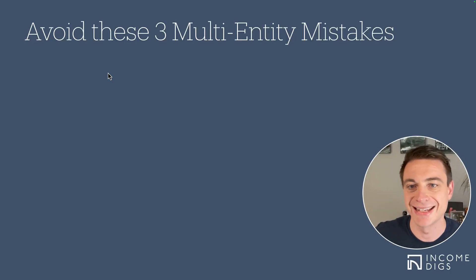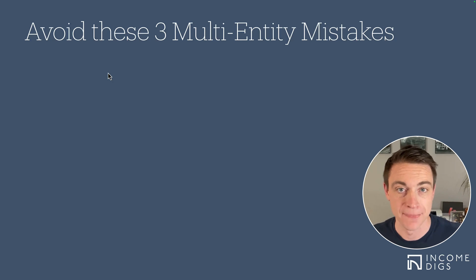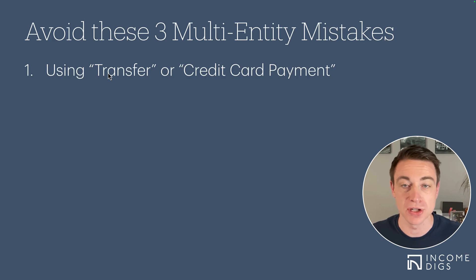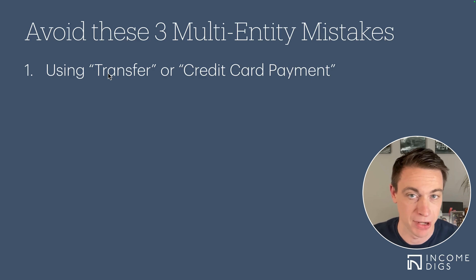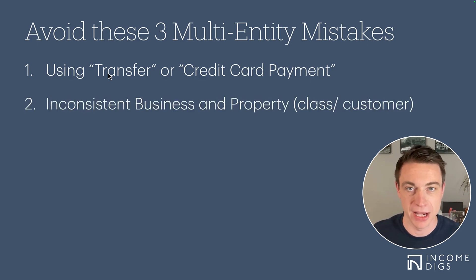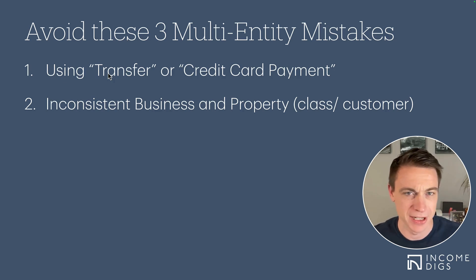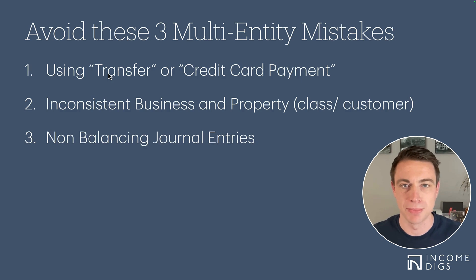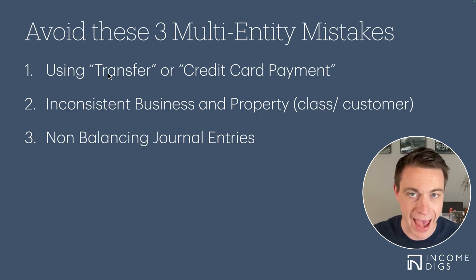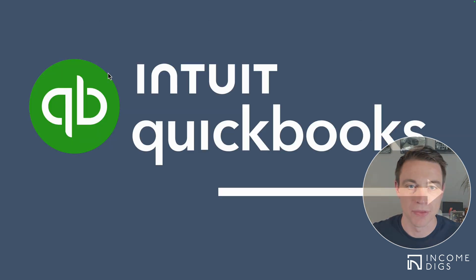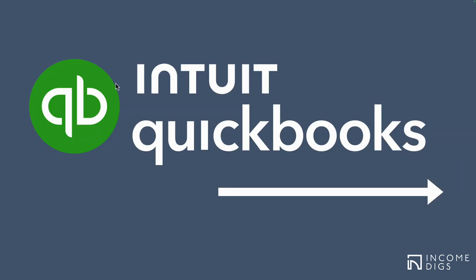So getting into it: three multi-entity mistakes to avoid to really make use of this amazing strategy. I'm going to demonstrate all these, but let's go through them quickly. One is using the transfer or the credit card payment transaction type — we absolutely cannot use that. Second, inconsistent business and property. And third, and potentially most detrimental, is mixing up our balances on our journal entries. We don't want to throw off our balance sheet. So let's go into QuickBooks.